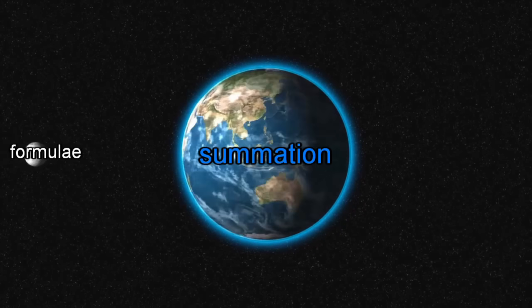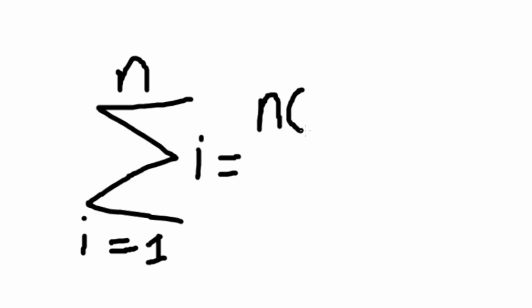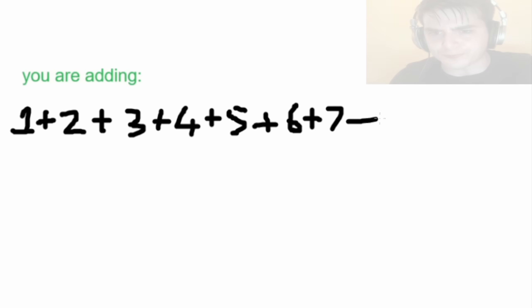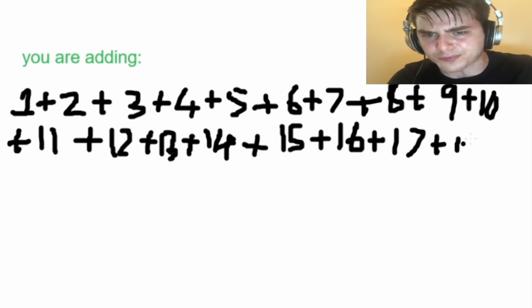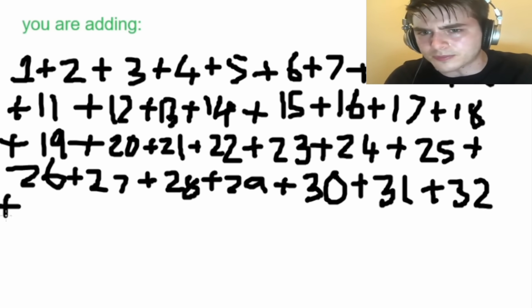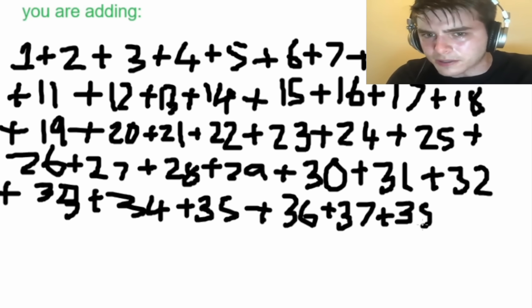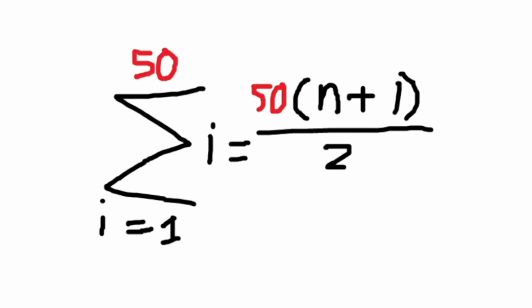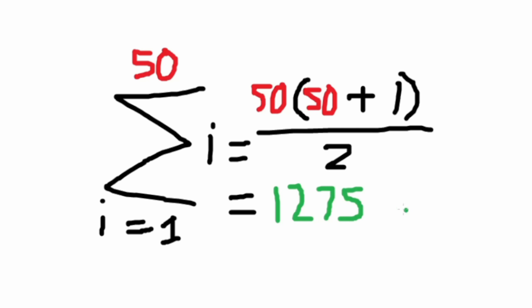There are a couple of useful common formulas that revolve around summation. This one gives us the sum of all the natural numbers — positive integers — from 1 to n. So if n equals 50, you are adding all integers from 1 to 50. That would be very painful had this formula not existed. Simply plug 50 into n and you get 1,275.